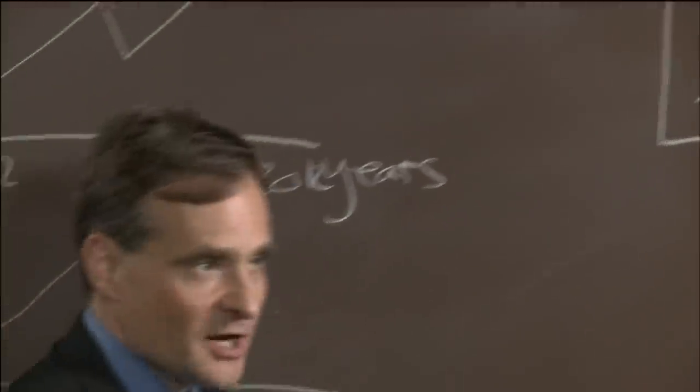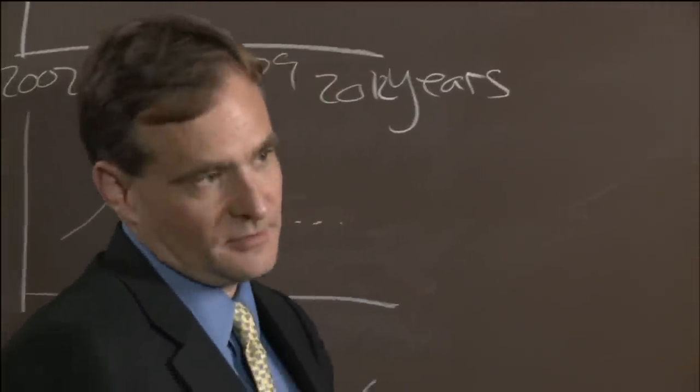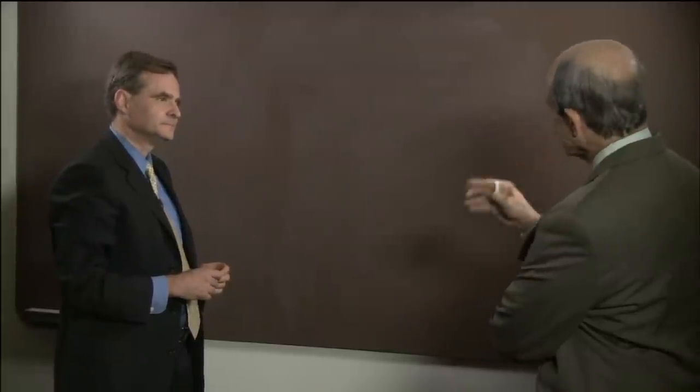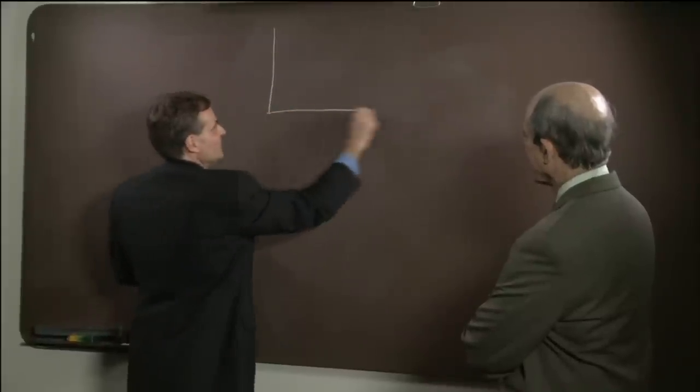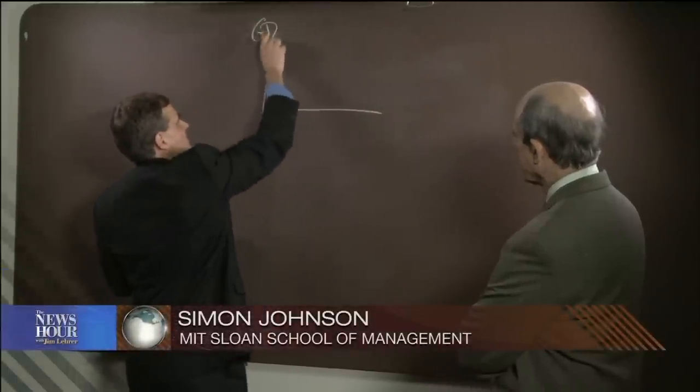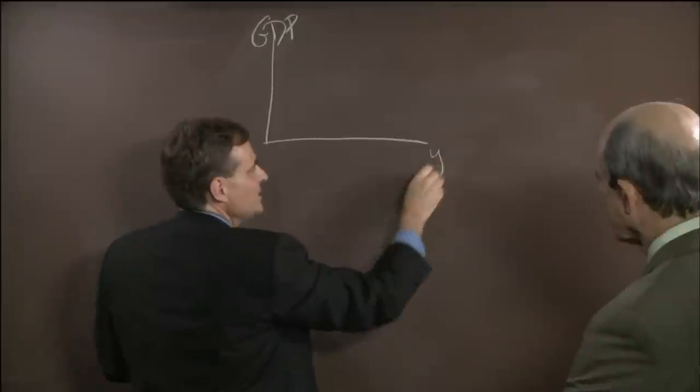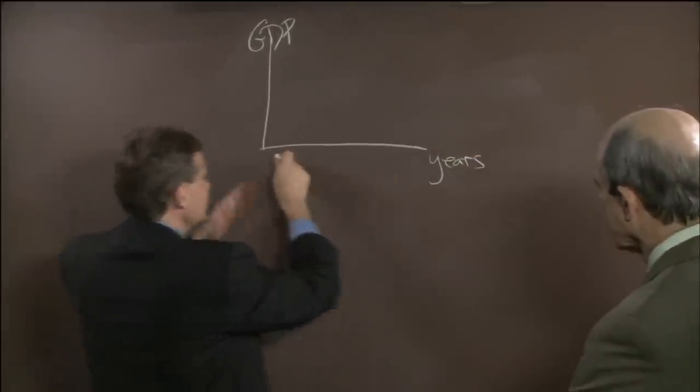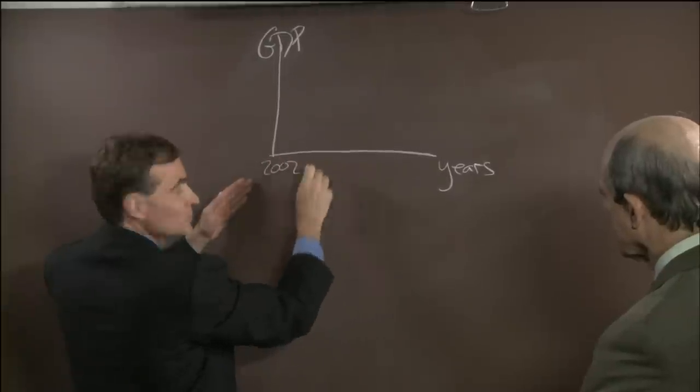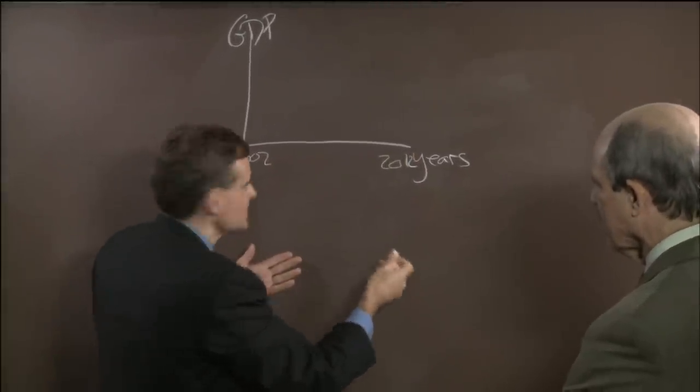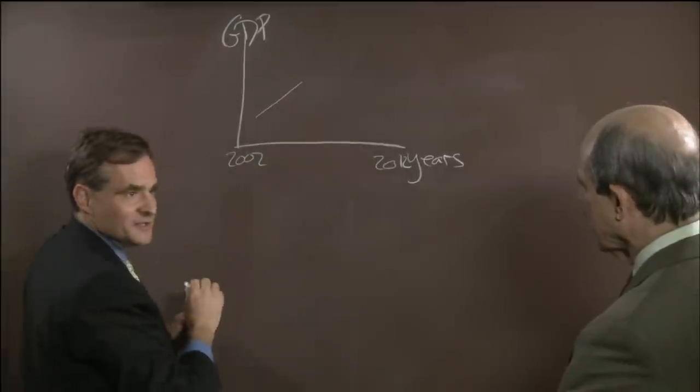PAUL SOLMAN: So we visited friend Simon Johnson, former chief economist at the IMF, at his MIT blackboard for a bit of drawing and drawing out. So what's a V-shaped recovery look like? Let me show you. Here's GDP, gross domestic product. That's output, what we produce. And here are years. Let's start, say, 2002, and maybe we'll run it out to 2012, which is further than we can probably see. The economy is growing like this. This is the recovery from the dot-com crash.